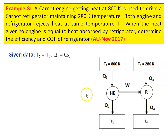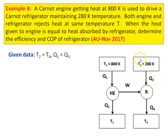This is the diagram that indicates the problem. A Carnot engine getting heat at 800 Kelvin — the source temperature is 800 Kelvin. The engine is getting heat energy from the source and is driving a Carnot refrigerator which is maintaining temperature 280 Kelvin — the temperature of the refrigerator space is 280 Kelvin. Both the engine and the refrigerator reject heat to the same temperature, so T1 equals T4.